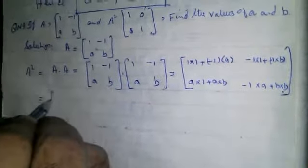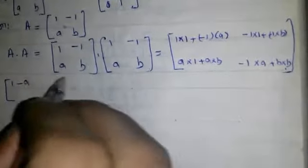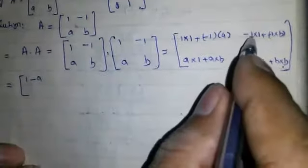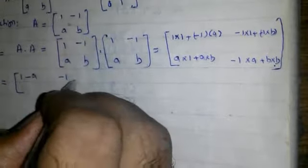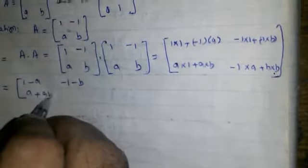Which is equal to: 1 minus a, minus 1 minus b, a, plus a b, minus a plus b squared.